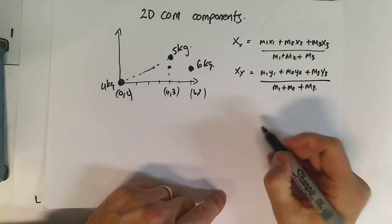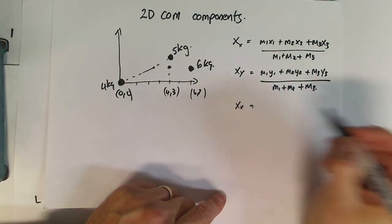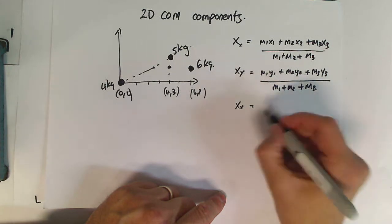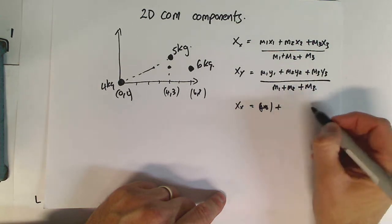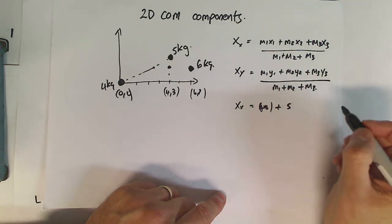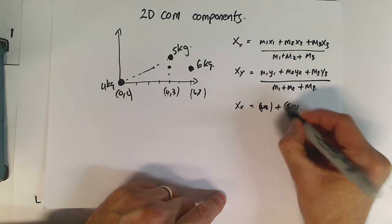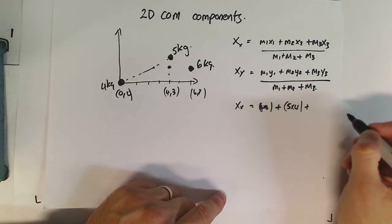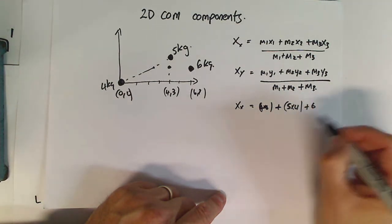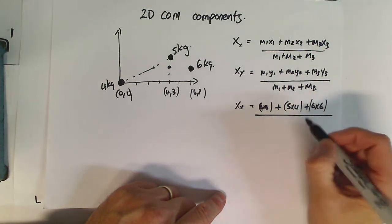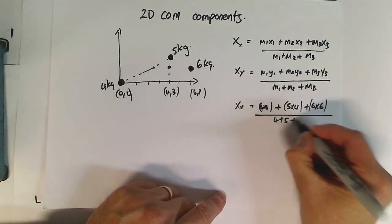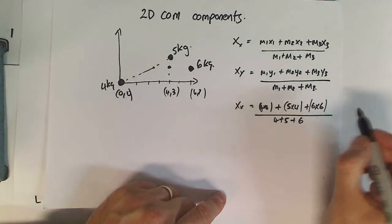So, we'll actually put those numbers in. Let's do the x. We're going to have m1, which is 4, times x1 is 0. So that little term equals 0. Mass 2 is 5, times the x component, which is 4. And mass 3 is 6, times the x component, which is 6. 6 times 6, all over 4 plus 5 plus 6, so all over 15.